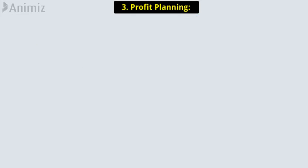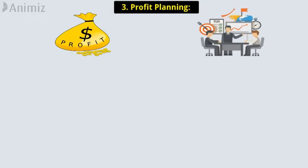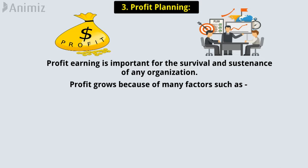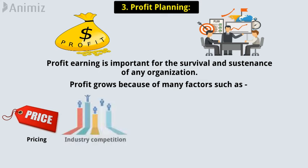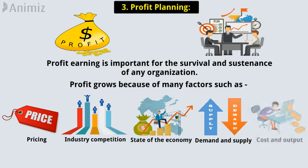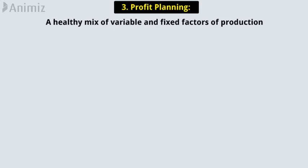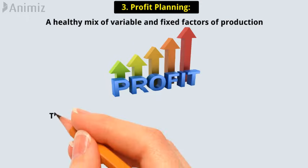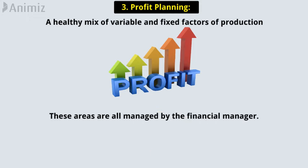Third: Profit Planning. Profit earning is one of the prime functions of any business organization; it is important for the survival and sustenance of any organization. Profit grows because of many factors such as pricing, industry competition, state of the economy, mechanism of demand and supply, cost, and output. A healthy mix of variable and fixed factors of production can lead to an increase in the profitability of the firm. These areas are all managed by the financial manager.